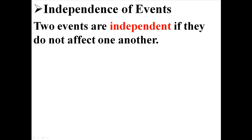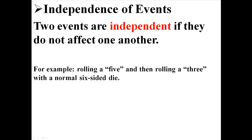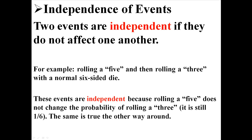Independence of events — two events are independent if they do not affect one another. For example, rolling a 5 and then rolling a 3 with a normal 6-sided die. These events are independent because rolling a 5 does not change the probability of rolling a 3 — it's still going to be 1 out of 6. And the same is true the other way around: rolling a 3 will not change the probability of rolling a 5.